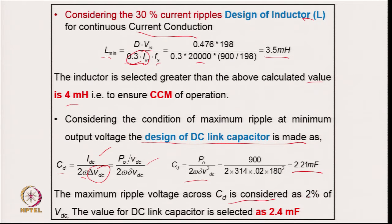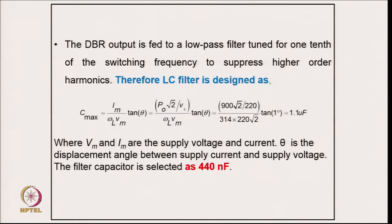With maximum ripple voltage across C_d considered as 2 percent, the DC link capacitor is selected at a standard value of 2.4 mF. The output is fed to a low-pass filter tuned at one-tenth of the switching frequency to suppress higher-order harmonics.